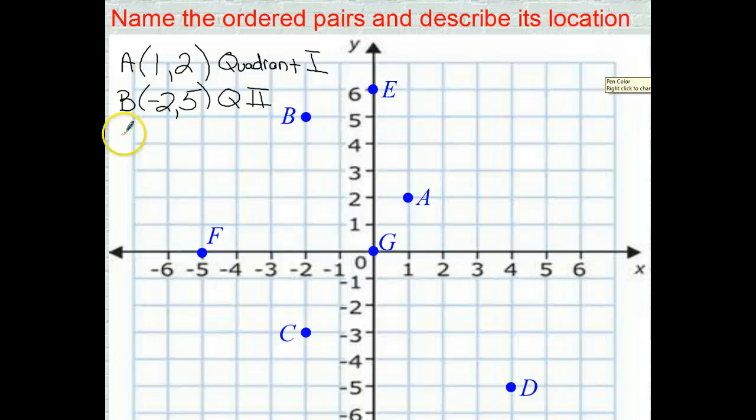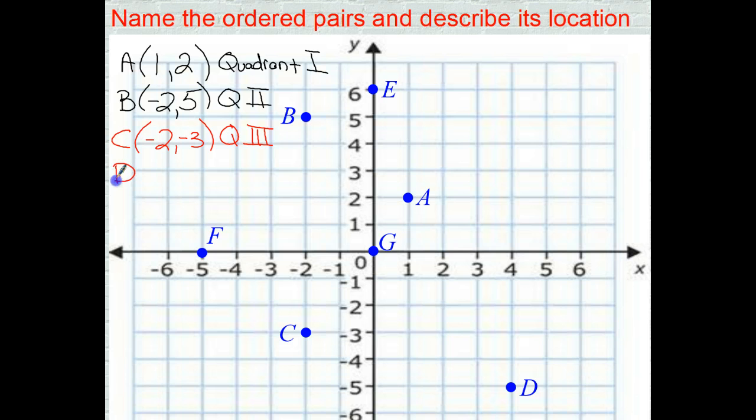All right, we're back. Ordered pair C. Point D, you should have at negative 2, negative 3, and that is quadrant, where are we here? One, two, that's quadrant 3. Point D is at 4, negative 5, and that's quadrant 4, IV, that's an IV, quadrant 4.